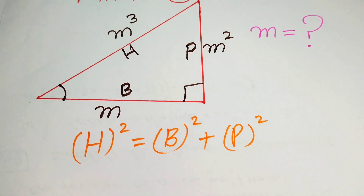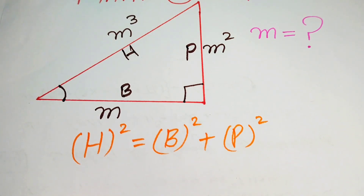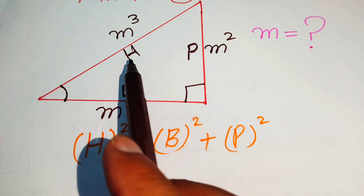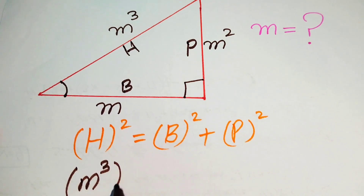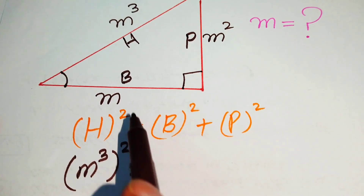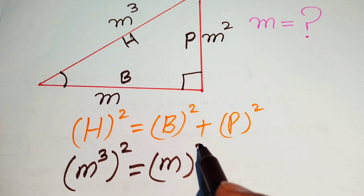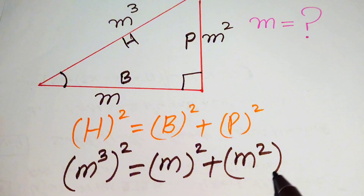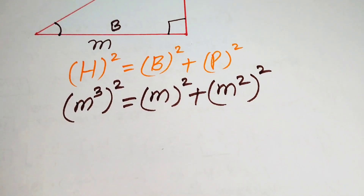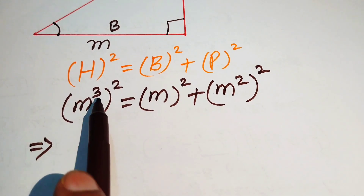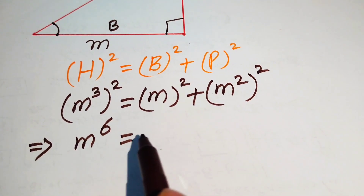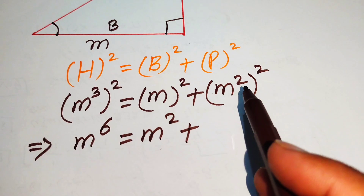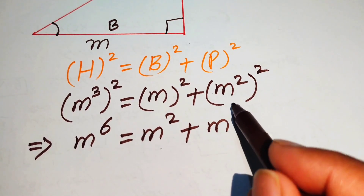Now we substitute the values. Our hypotenuse is m cubed, so it becomes (m³)² equals (m)² plus (m²)². Simplifying using exponent rules — exponents multiply — we get m⁶ equals m² plus m⁴.